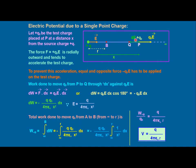Electric potential due to a single point charge: suppose there is a charge plus Q and we try to calculate the electric potential at point P. First, we calculate the work done in bringing the test charge to point P. The force acting between them is q_0 * E. So dW = F dot dx = q_0 * E * dx. Substituting E = q / (4 pi epsilon_0 x^2) and integrating dW from infinity to r, we get the electric potential V = q / (4 pi epsilon_0 r). This is the electric potential due to a single point charge.